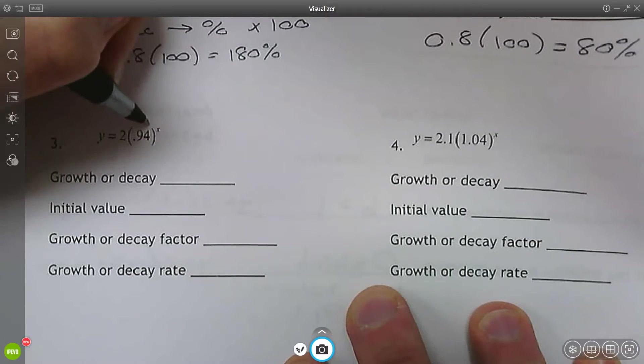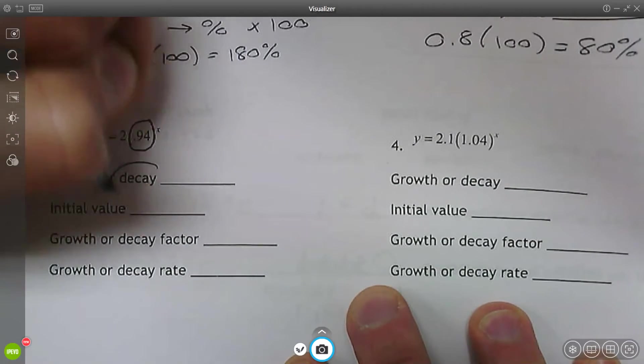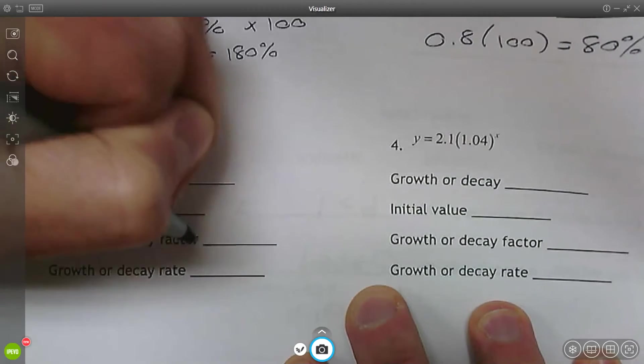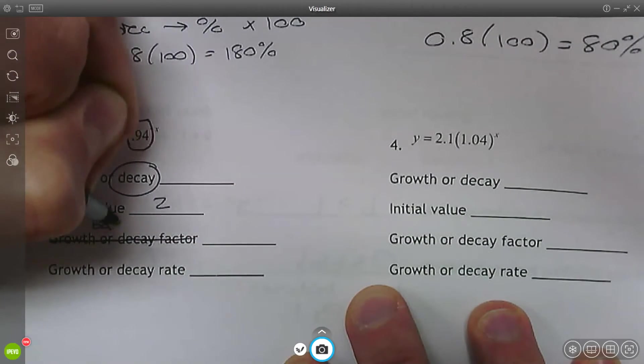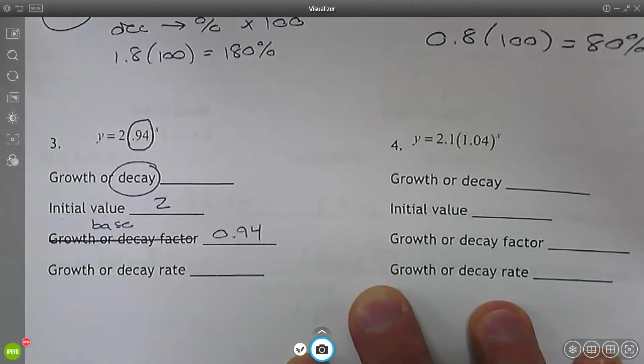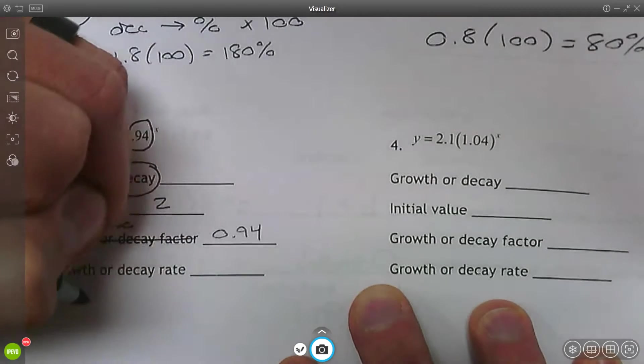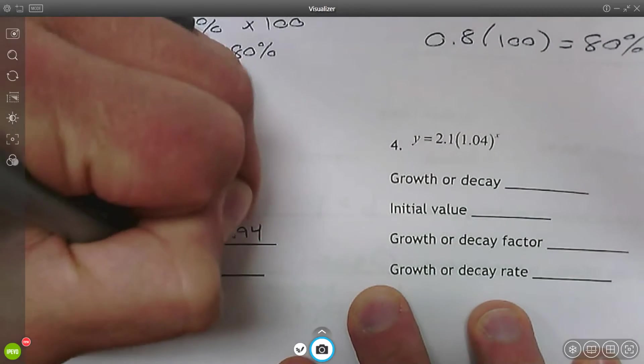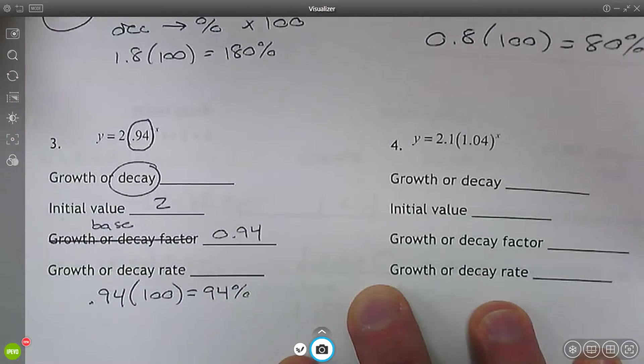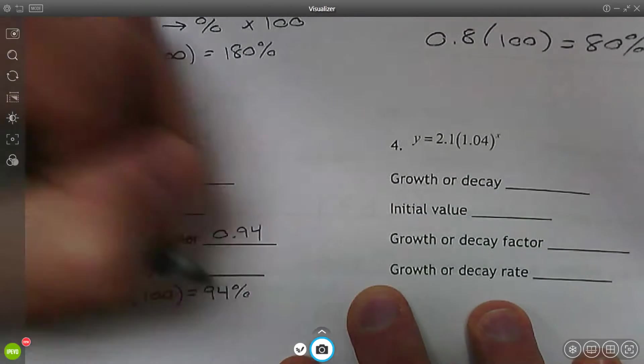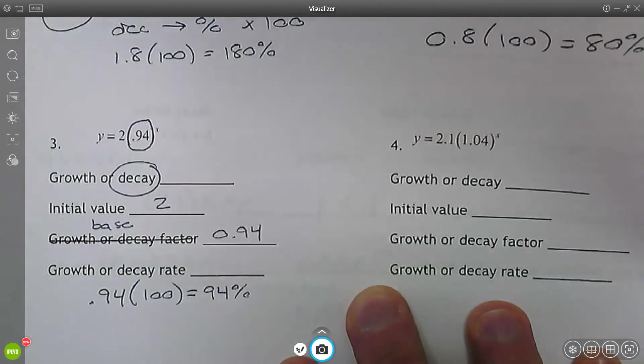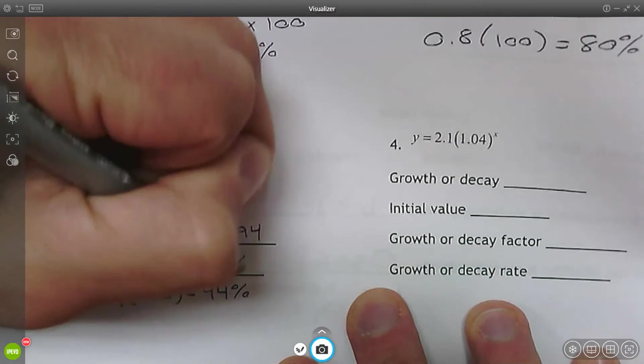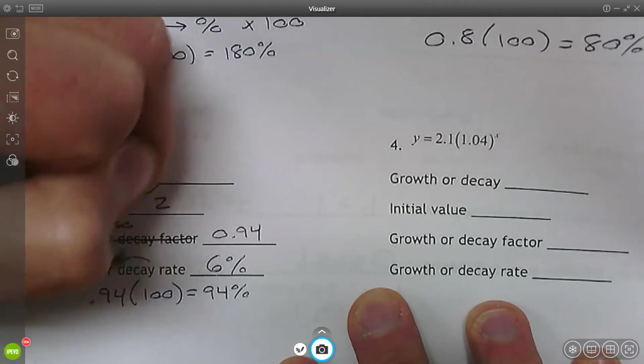In number three, the base is 0.94. So this is exponential decay. The initial value is 2. The base is 0.94. To find the rate, I'm going to take that base, multiply it by 100 so I can convert it to a percent, 94%. There's 94% left over. I started at 100. Now I'm at 94. I decreased by 6%. My decay rate is 6%.